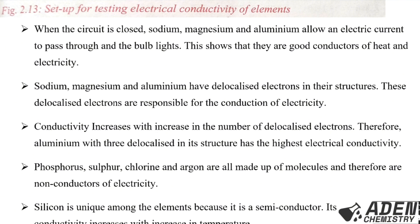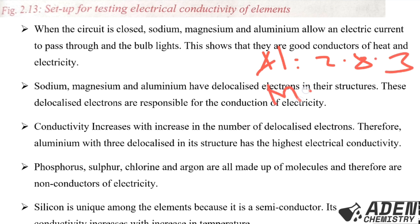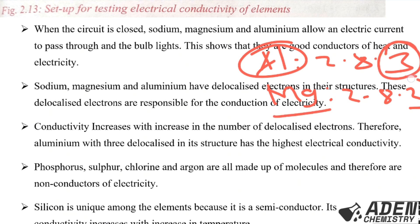Conductivity increases with increase in the number of localized electrons. Therefore aluminium, with three localized electrons in its structure, has the highest electrical conductivity. For example, aluminium has electronic configuration 2, 8, 3 and magnesium 2, 8, 2. Aluminium conducts more heat and electricity compared to magnesium because aluminium has more localized electrons than magnesium.